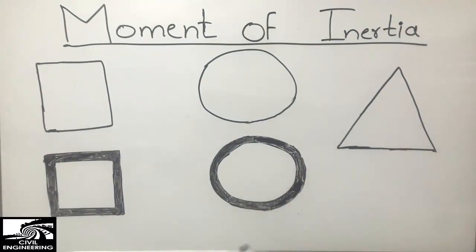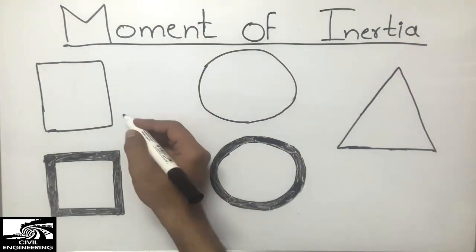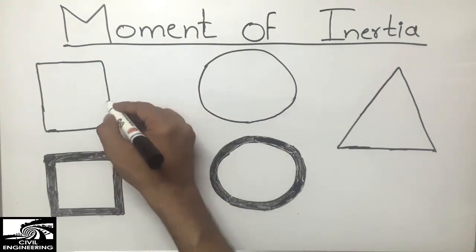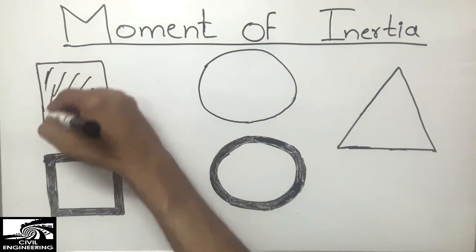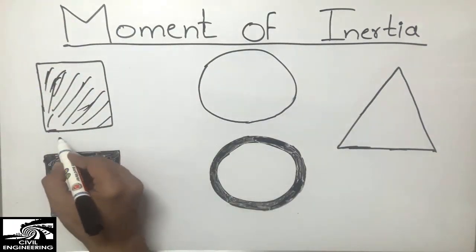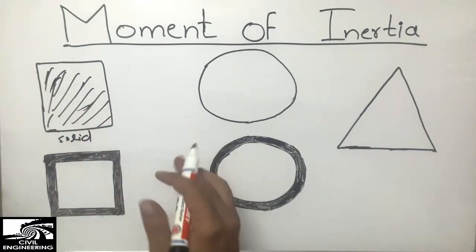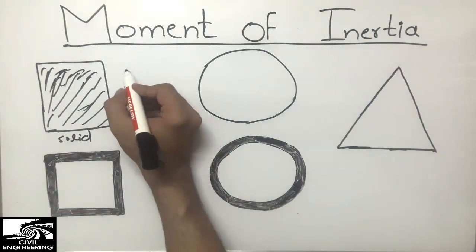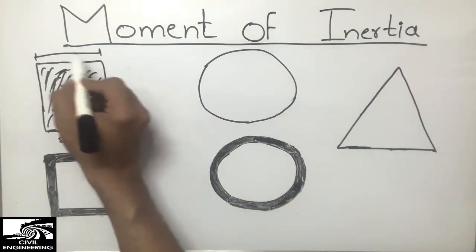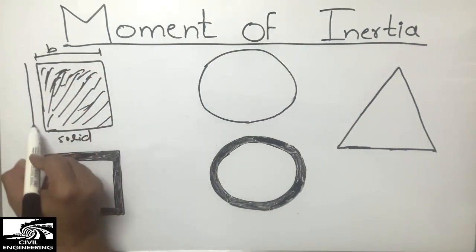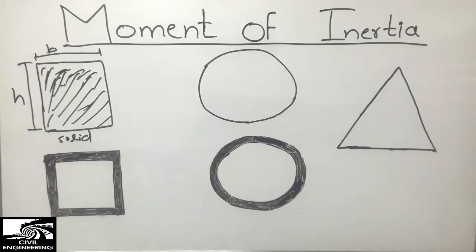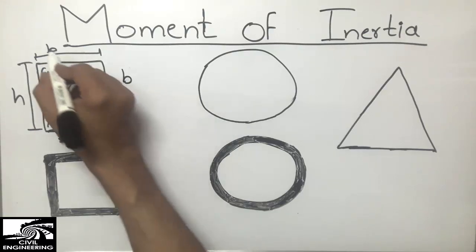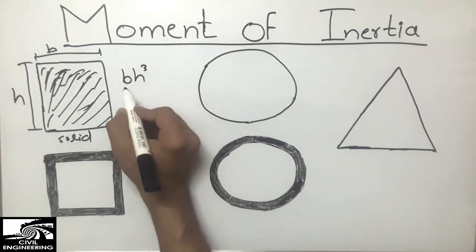This is a rectangular solid object — a solid rectangular beam. To find its moment of inertia, let's consider b as the width of the beam and h as the height (depth) of the beam. The moment of inertia of this rectangular beam is b times h cubed divided by 12.